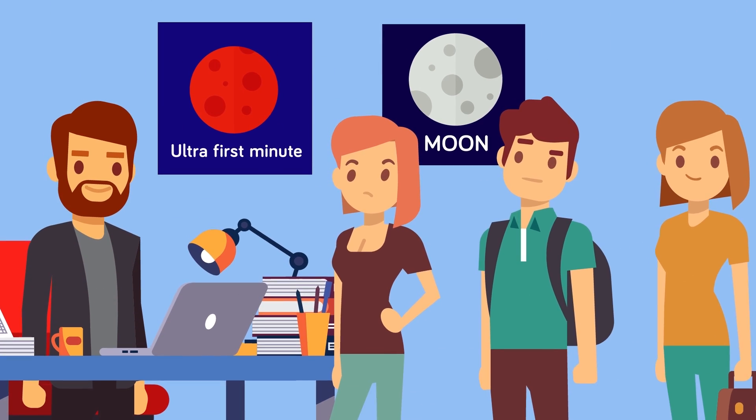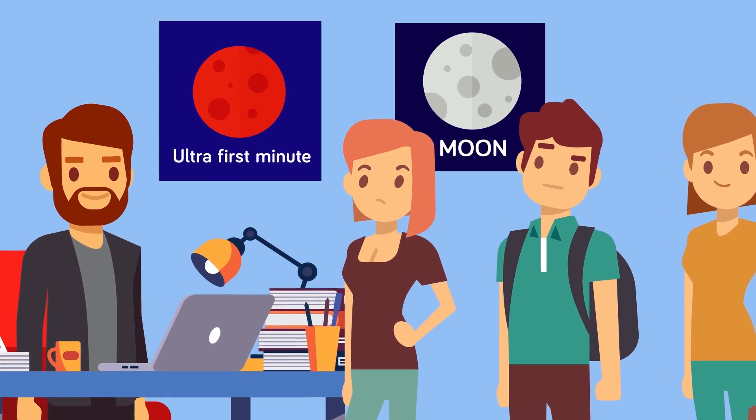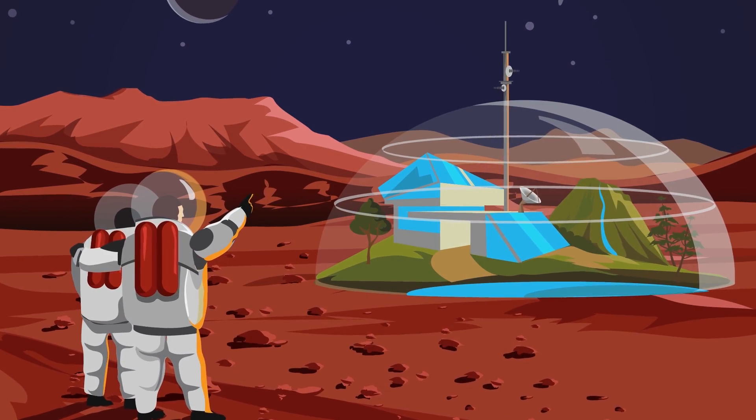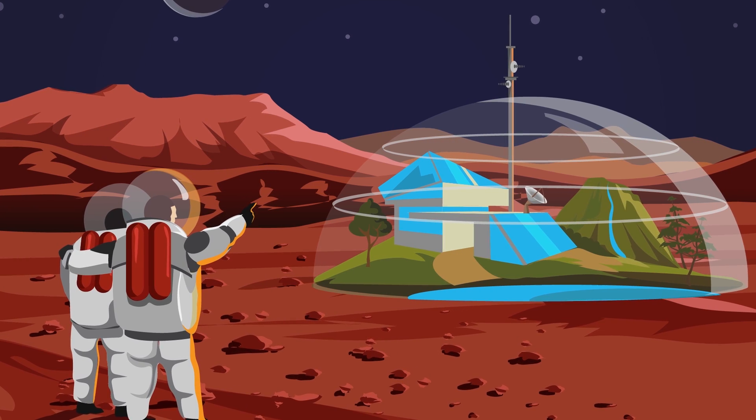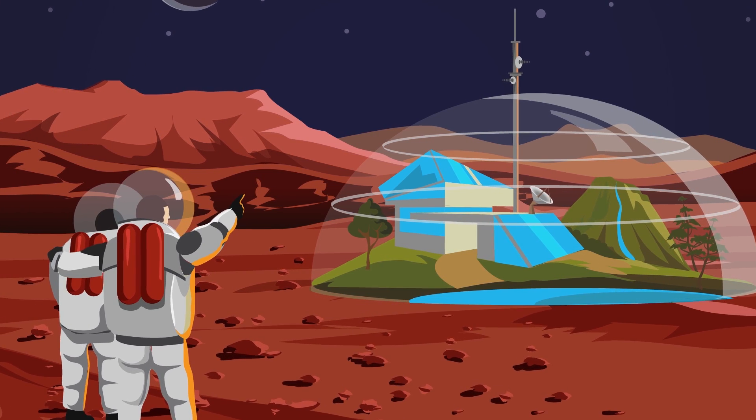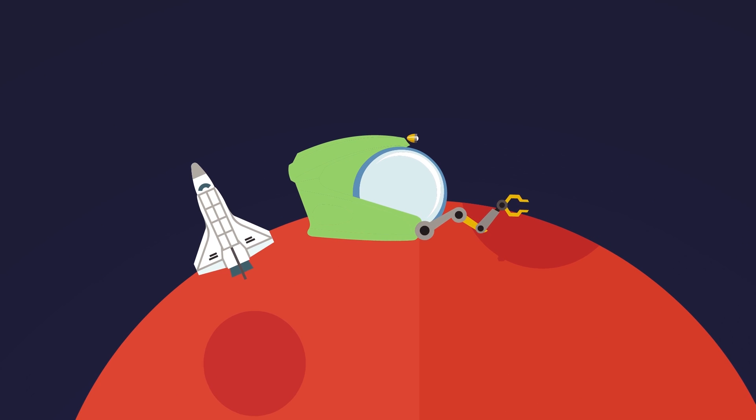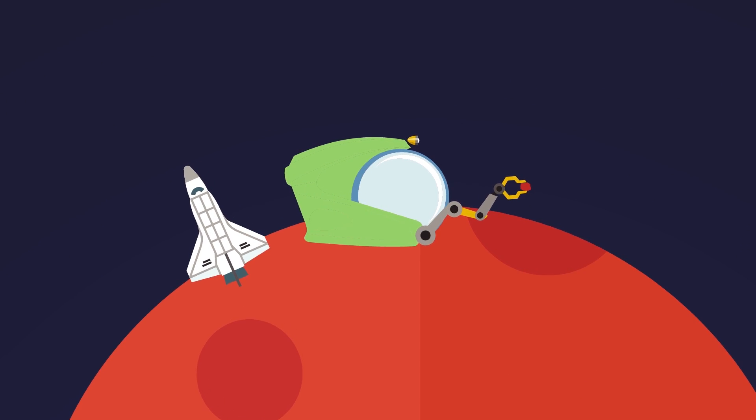Humanity will begin to take its first real steps to establishing itself outside of the Earth. What will begin as tourist destinations on the Moon and Mars will grow into actual colonies, though still heavily dependent on Earth.